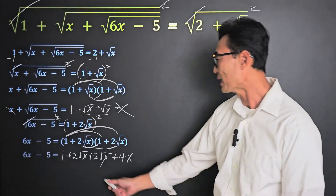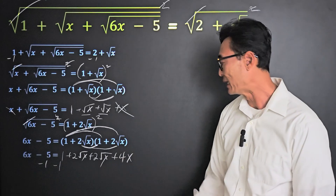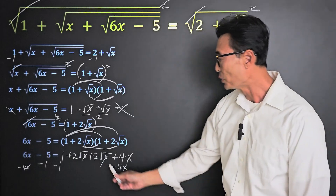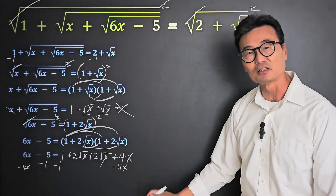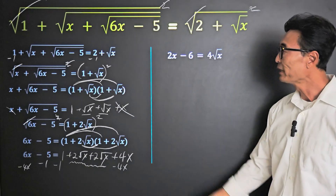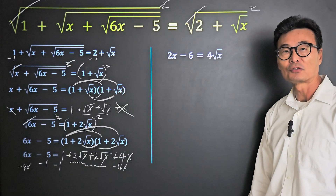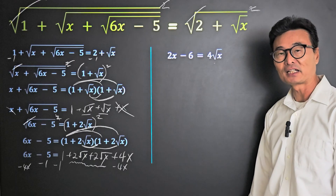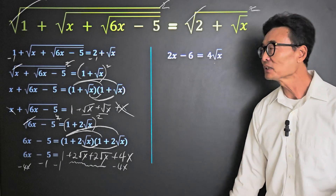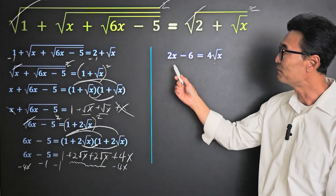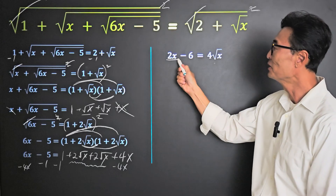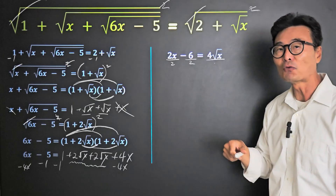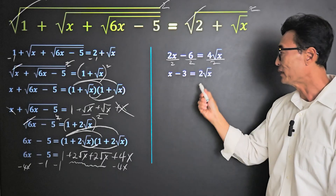From here, let's go ahead and subtract 1 and subtract 4x, so we would have just the root x terms on the right side of the equal sign, leaving us with 2x minus 6 equals 4 root x. To get rid of that last square root sign, we're going to square both sides once again. However, so that we don't get a big number, let's go ahead and reduce this equation. Notice that I could divide everything by 2: dividing 2x by 2 gives x, dividing 6 by 2 gives 3, and dividing 4 by 2 gives 2.